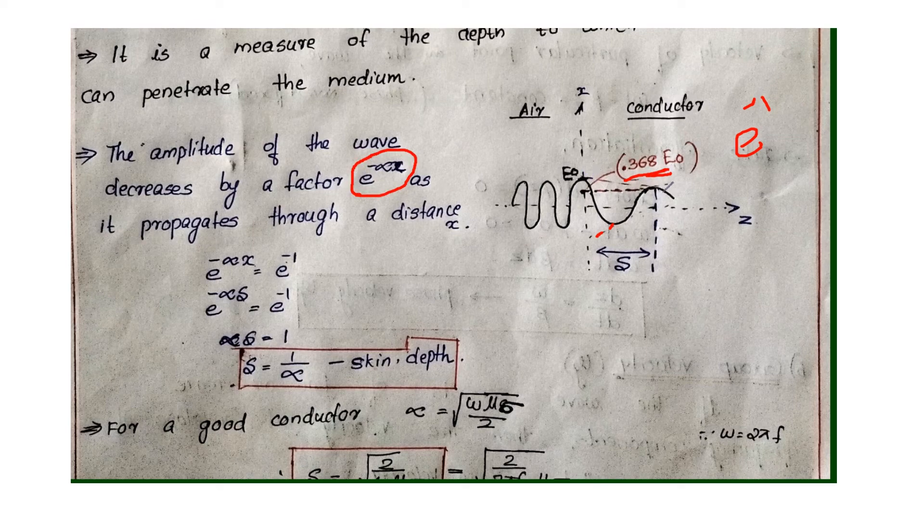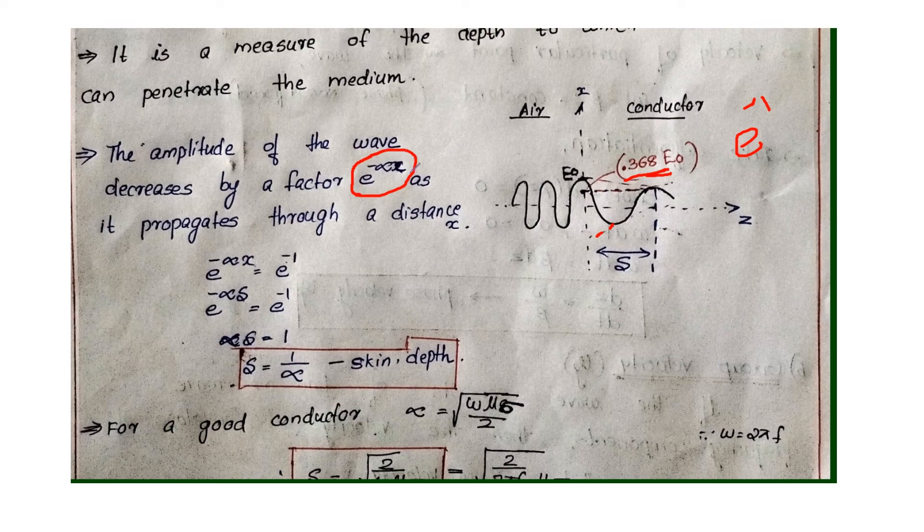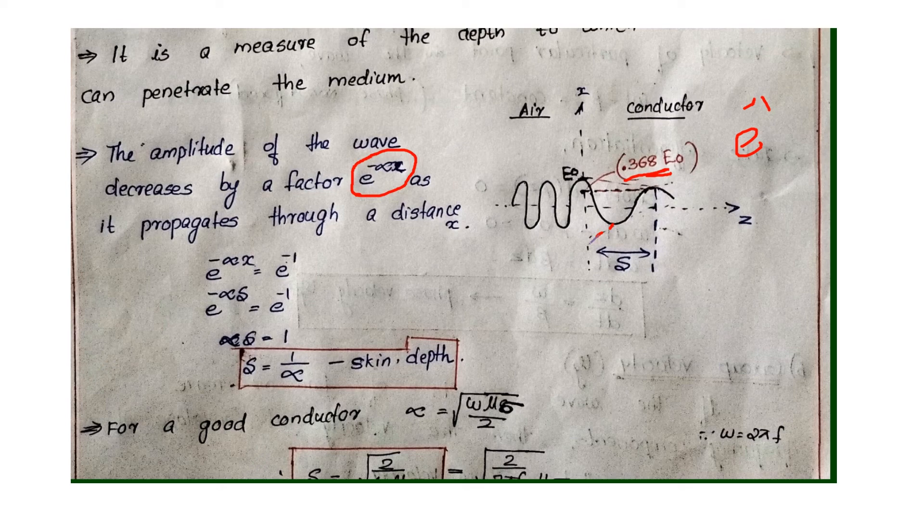Now, the amplitude decreases by a factor e raised to minus alpha x as it propagates through a distance x.